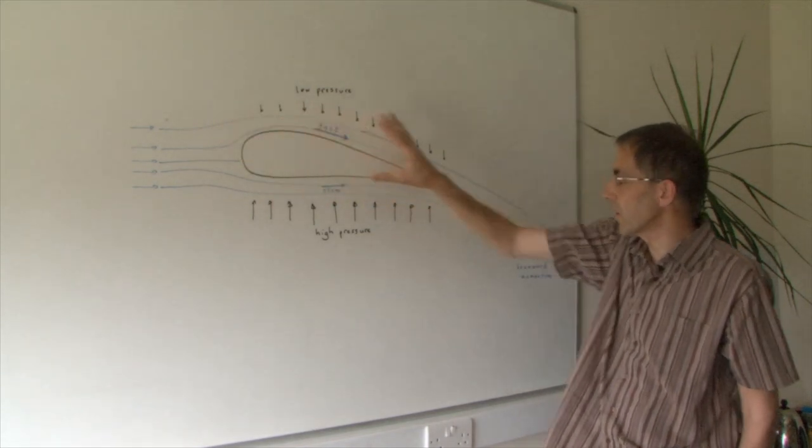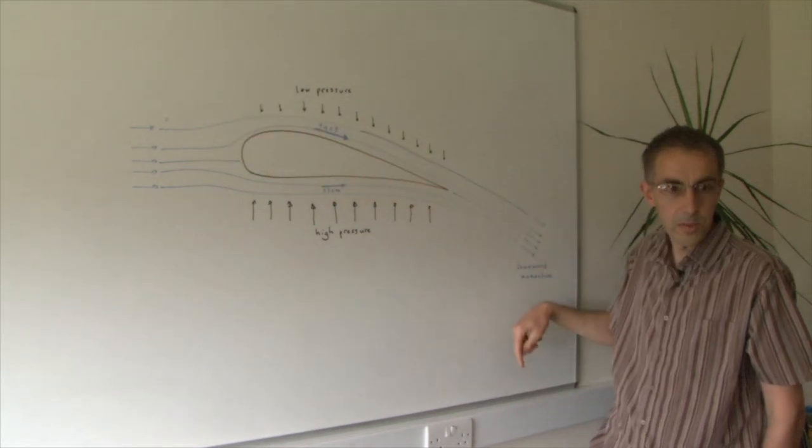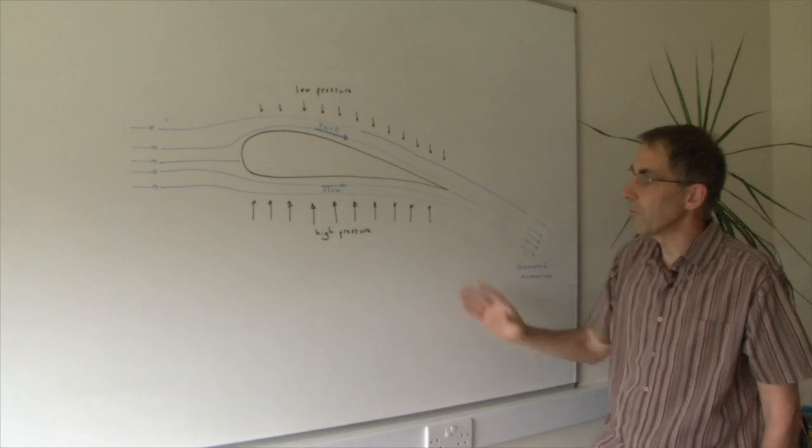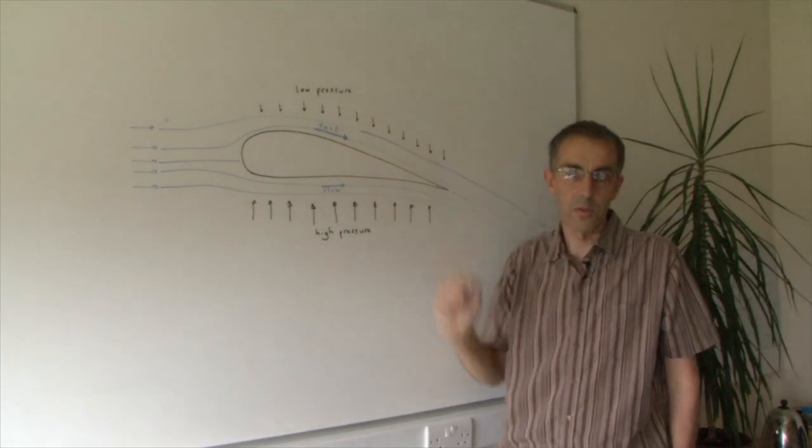So it comes in horizontally, but it gets thrown downwards, and because it's being thrown downwards, that creates a force upwards on the wing, which lifts the aeroplane.